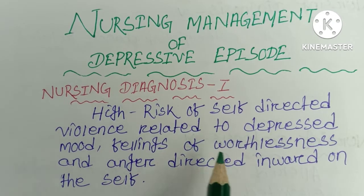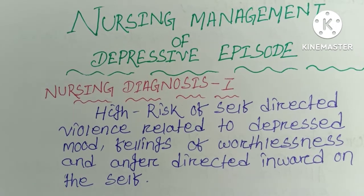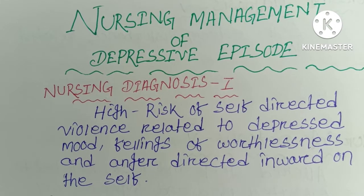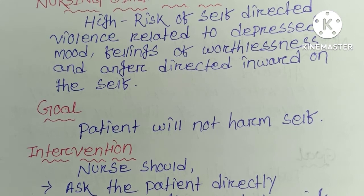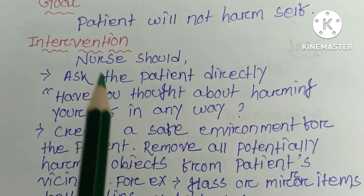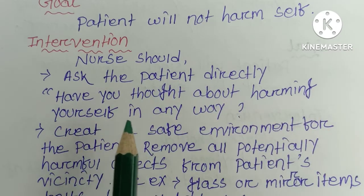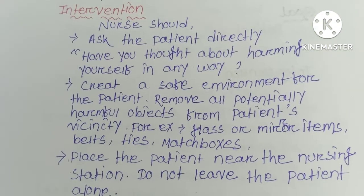Nursing Diagnosis 1 is high risk of self-directed violence related to depressed mood, feelings of worthlessness, and anger directed inward on the self. The goal is that the patient will not harm self. The intervention is: the nurse should ask the patient directly, 'Have you thought about harming yourself in any way?'